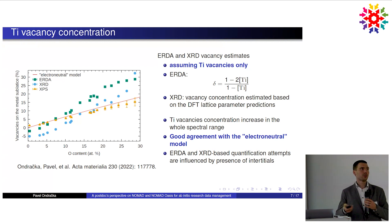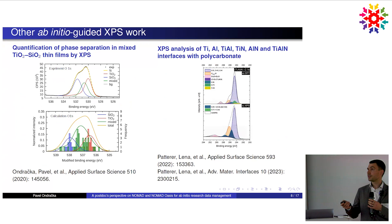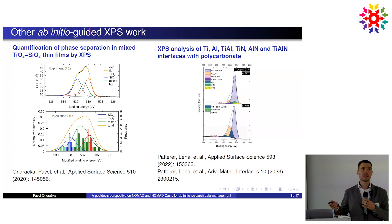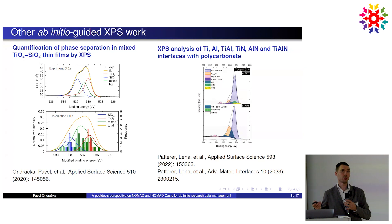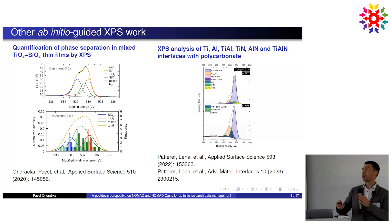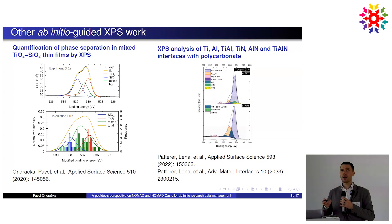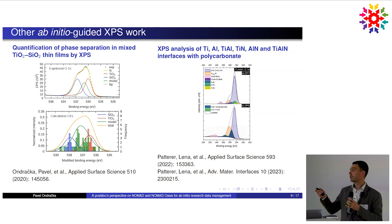This ab initio guided quantification method was also applicable to other material systems. For amorphous mixed titanium dioxide/silicon dioxide films, we were able to distinguish oxygen in different environments — in silica, titania, and mixed environments — and from that quantify the onset of phase separation at the atomic scale, at length scales you might see with atom probe tomography. For polycarbonate interfaces, we were also able to do some adhesion quantification for different materials.